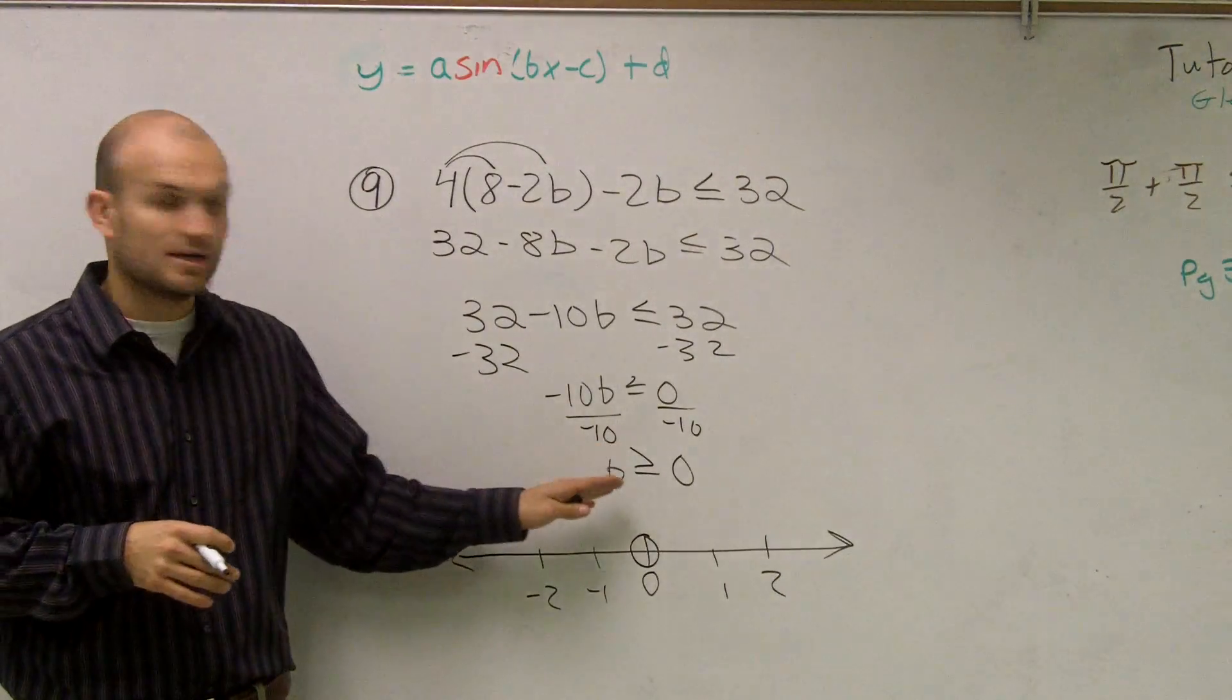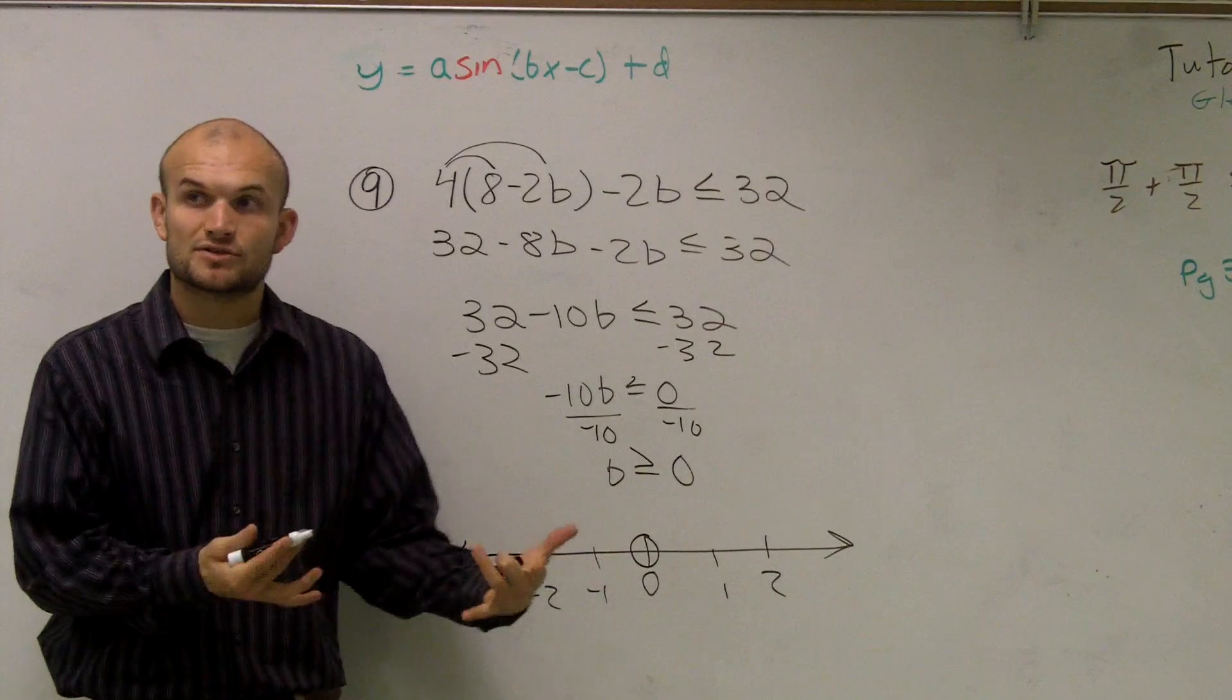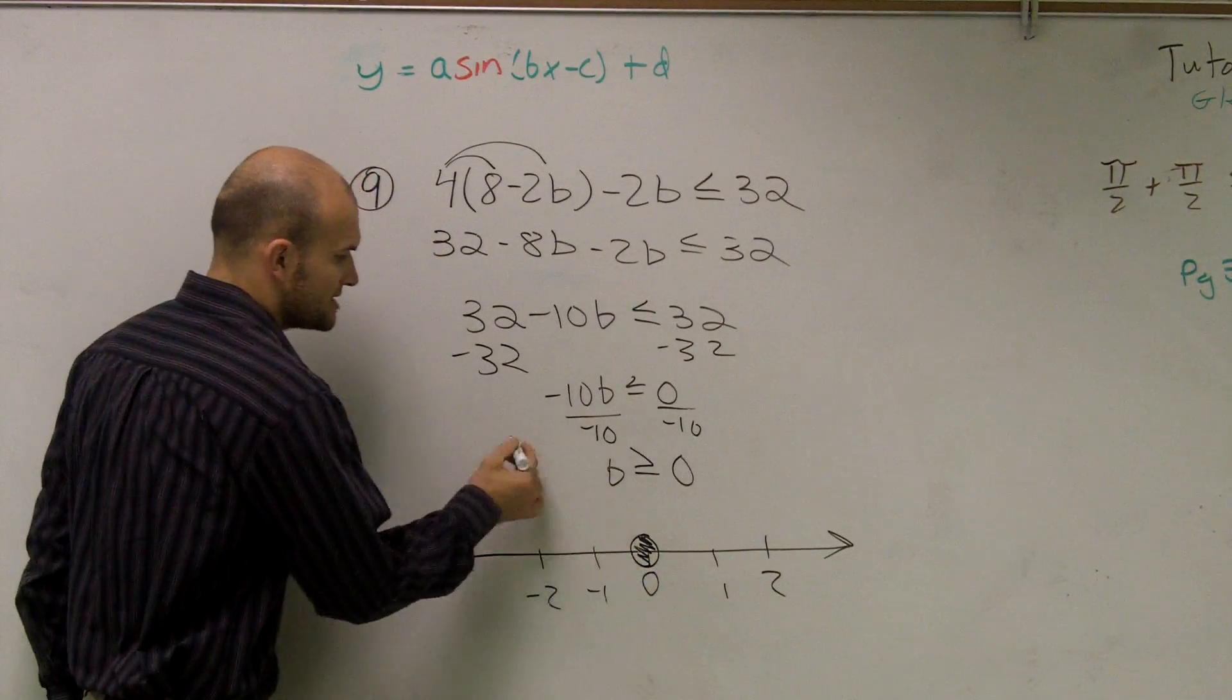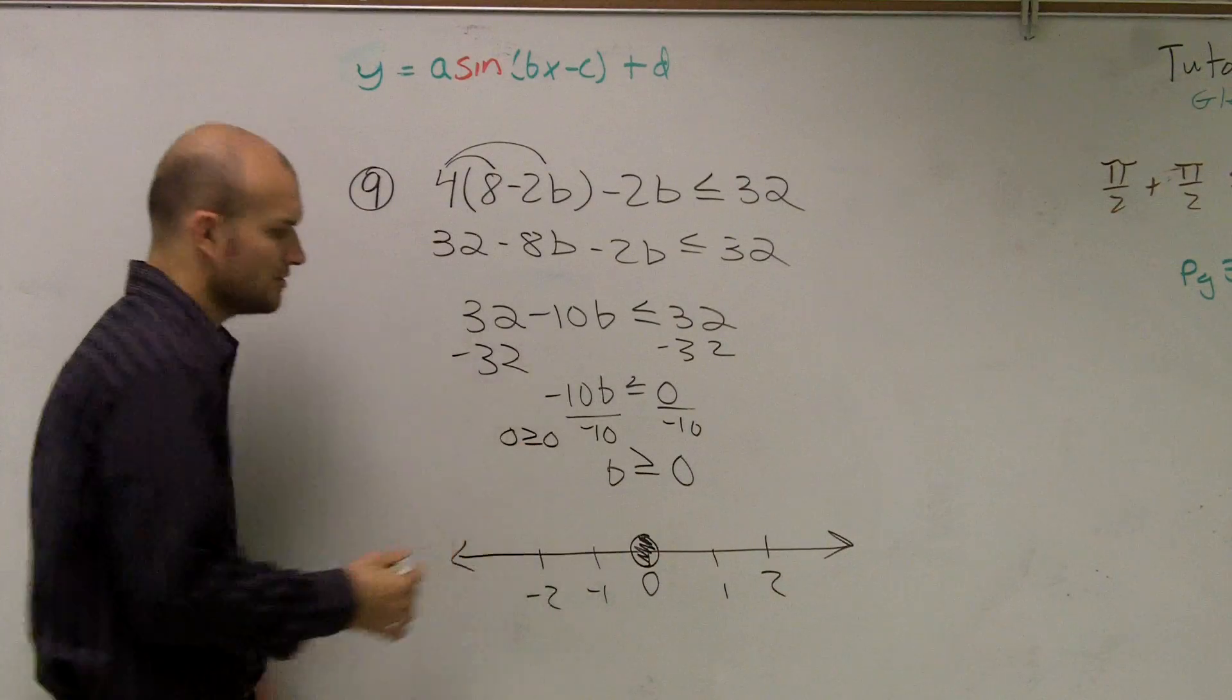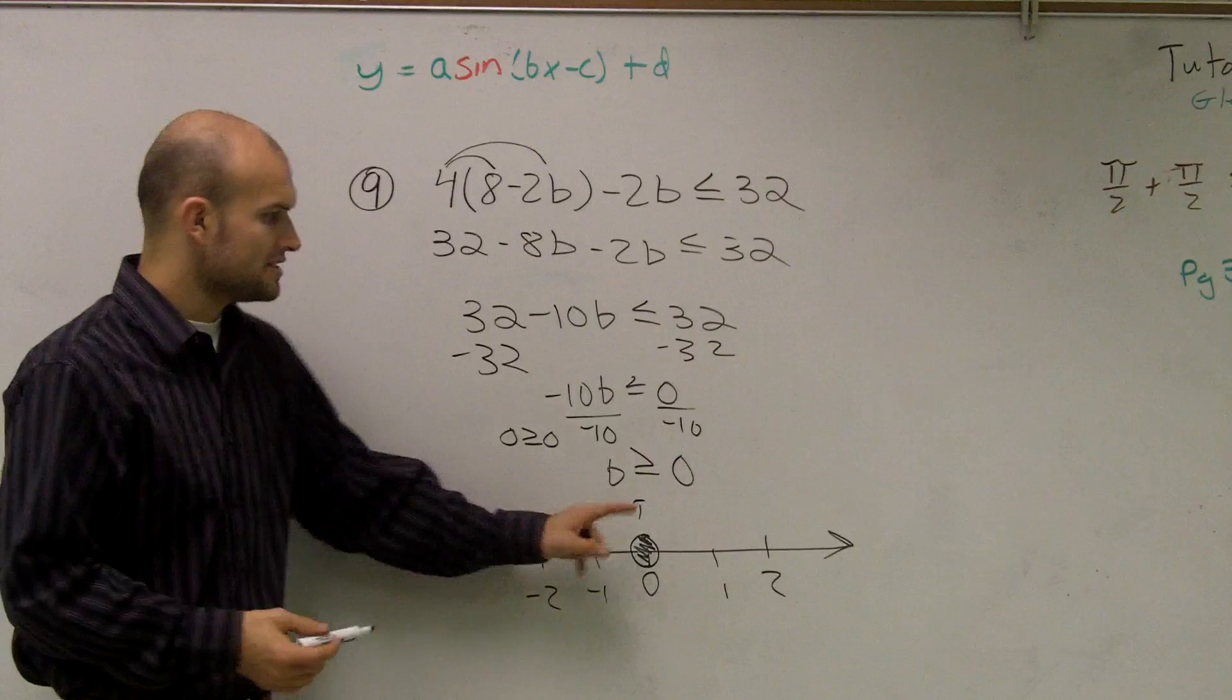So we have b is greater than or equal to zero. Then the next thing I need to do is remember, whenever it's greater than or equal to, we can shade it in, because if I plug in zero, zero greater than or equal to zero, that's true, right? Because zero is equal to zero.